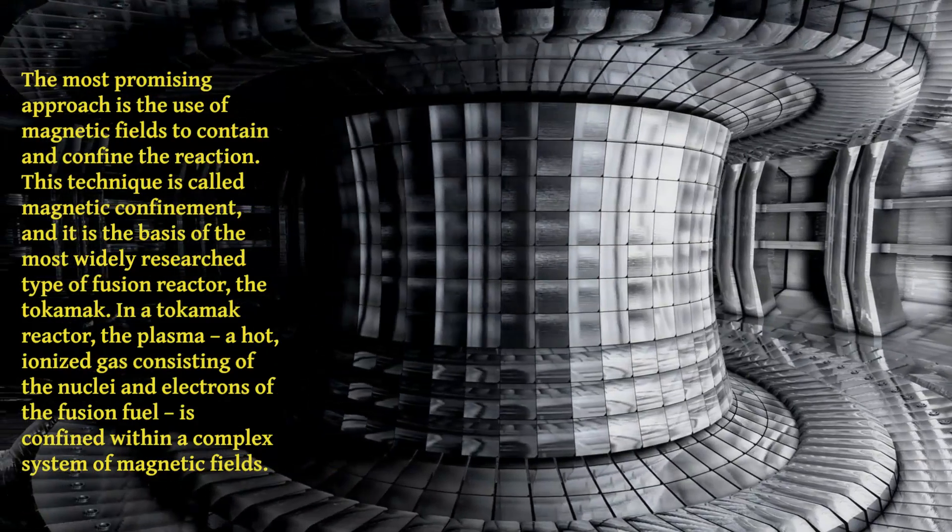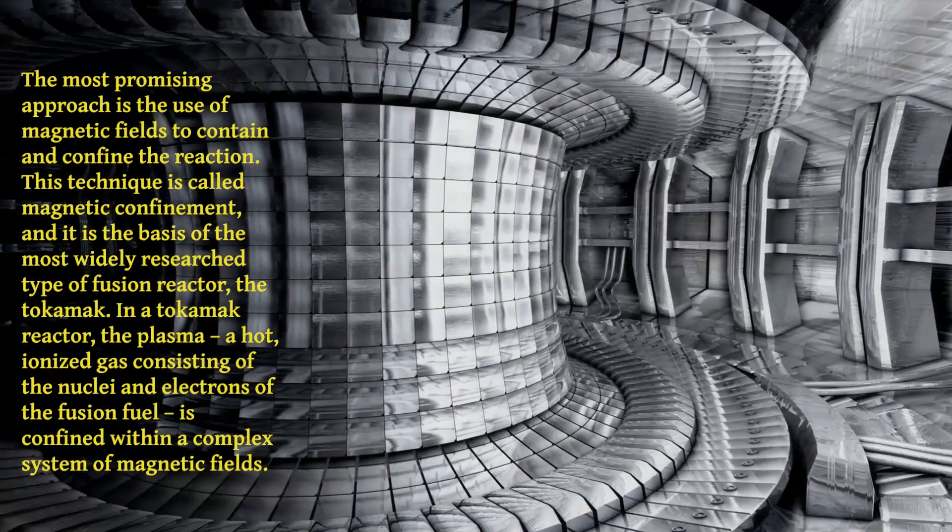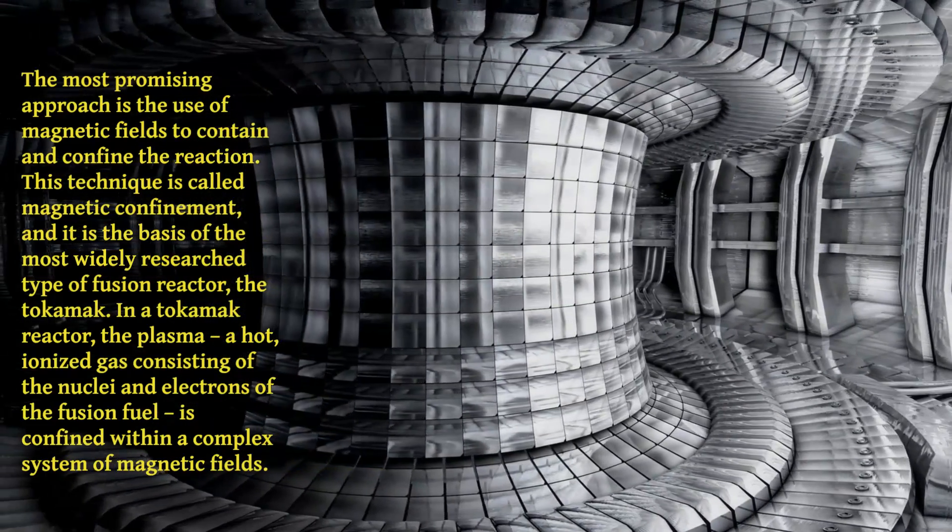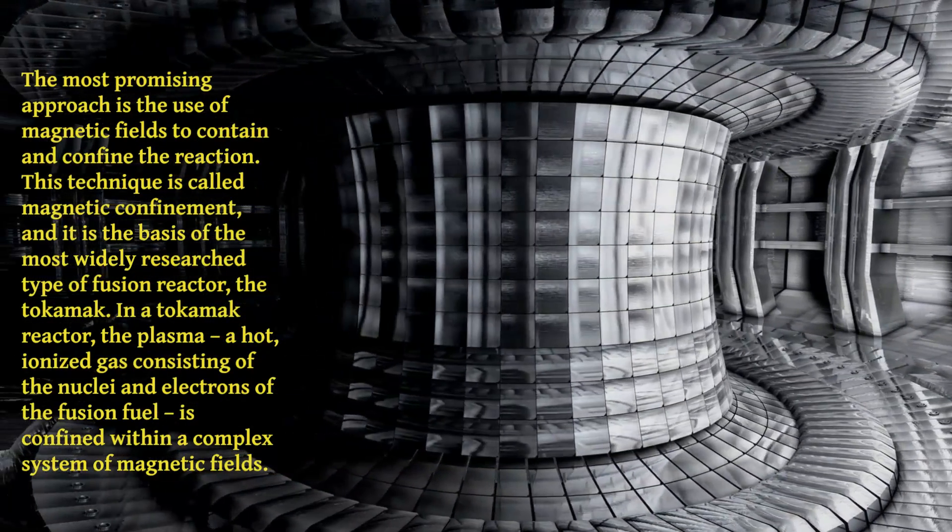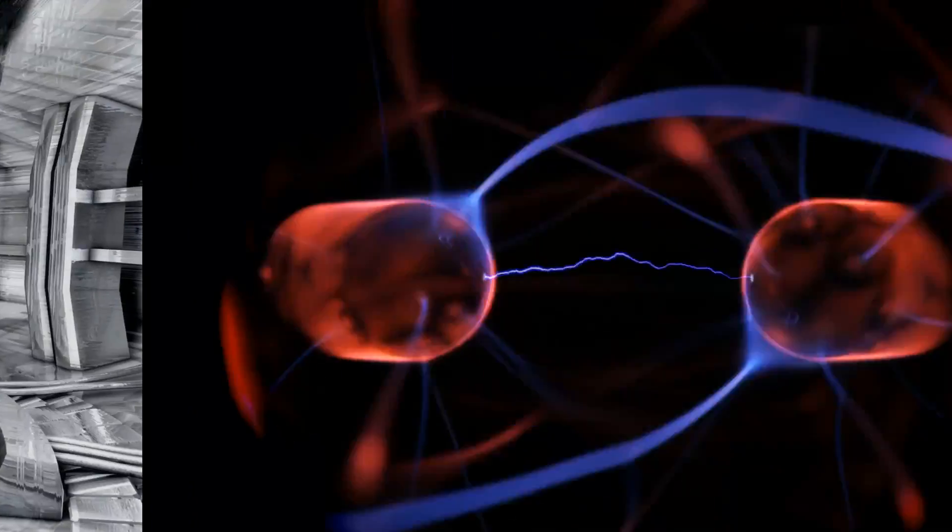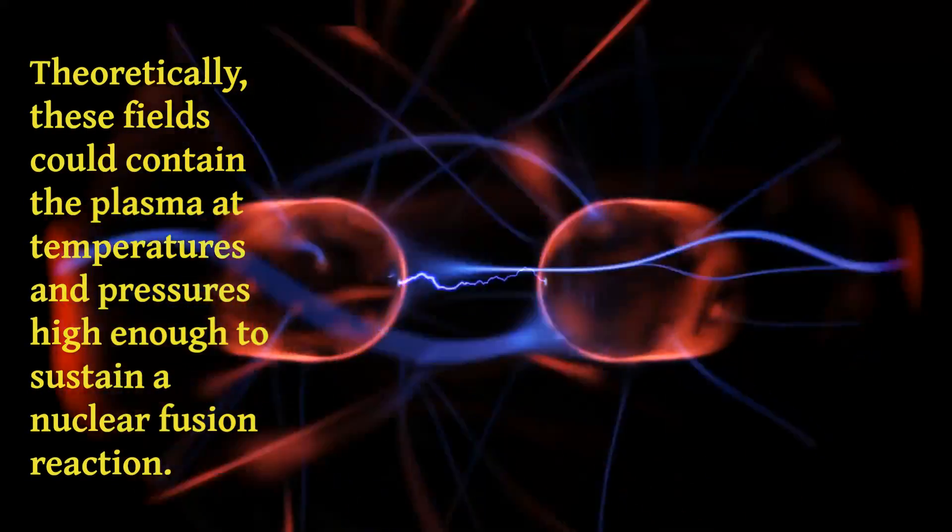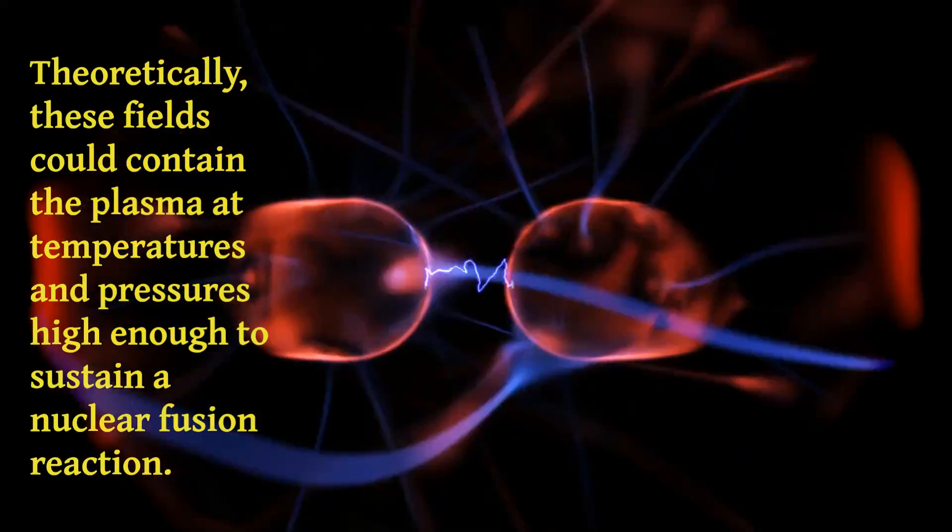In a tokamak reactor, the plasma, a hot, ionized gas consisting of the nuclei and electrons of the fusion fuel, is confined within a complex system of magnetic fields. Theoretically, these fields could contain the plasma at temperatures and pressures high enough to sustain a nuclear fusion reaction.